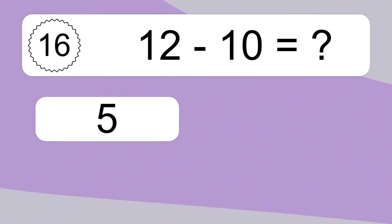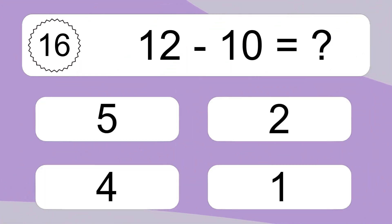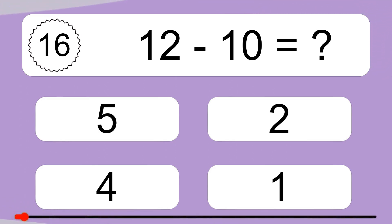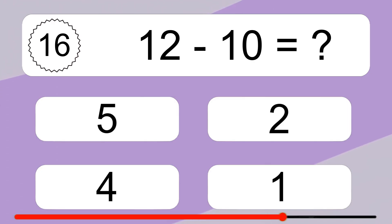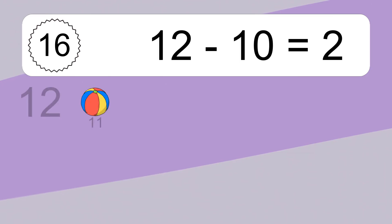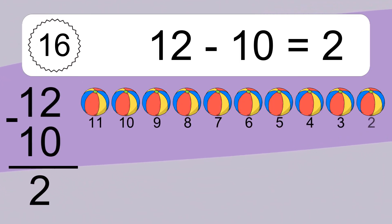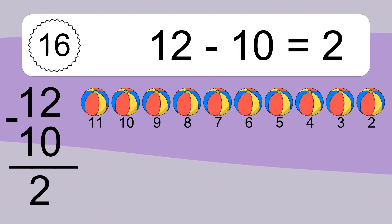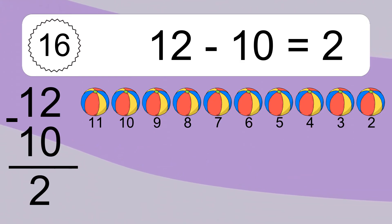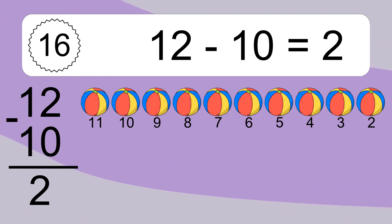12 minus 10 equals what? 12 minus 10 equals 2. Let's count it: 11, 10, 9, 8, 7, 6, 5, 4, 3, 2.